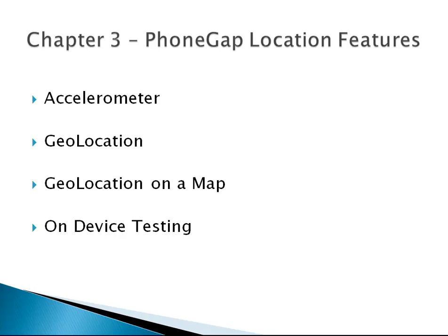Chapter 3, we'll look at some of the PhoneGap location APIs. We'll look at the accelerometer, which shows us the acceleration of the actual device — turning it, throwing it up in the air, whatever. That's used mostly for game development, where you tip the device to steer a car or something like that. We'll look at geolocation, which is very popular, and will pinpoint a user's location for unlimited types of applications. We'll get latitude and longitude coordinates and then plot them on a map using the Google Maps API. We'll test this on the actual device.